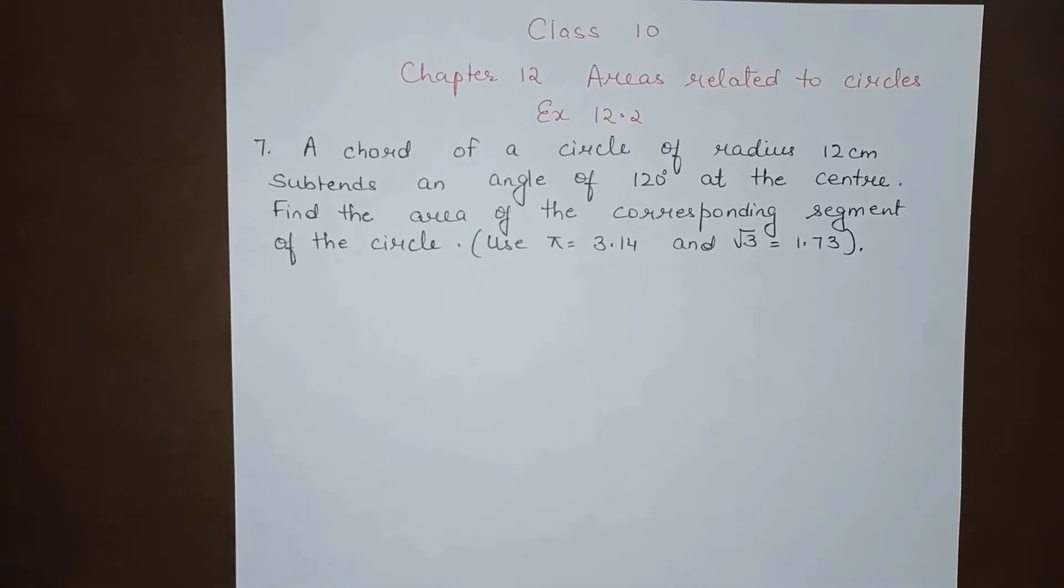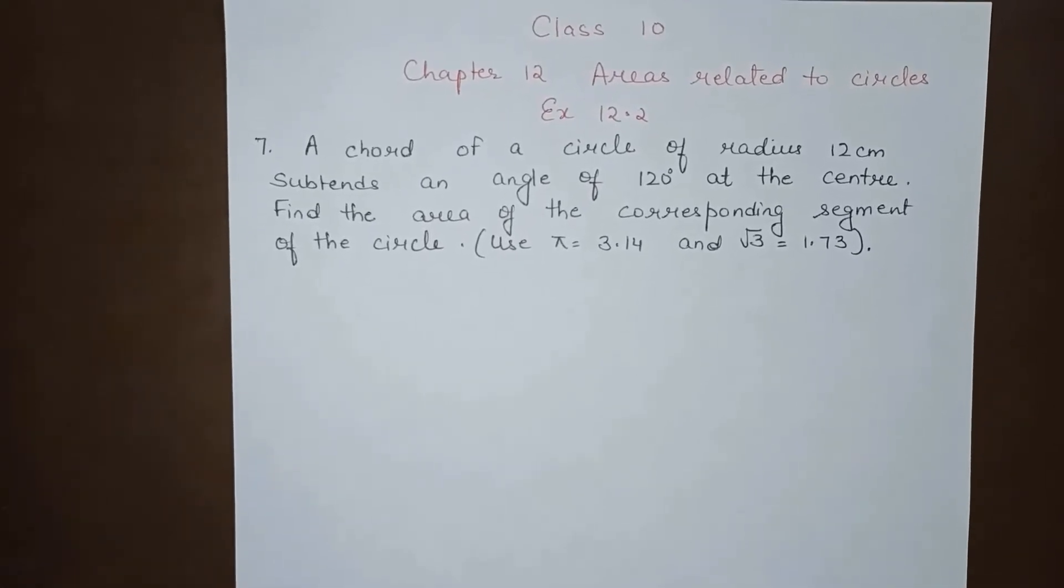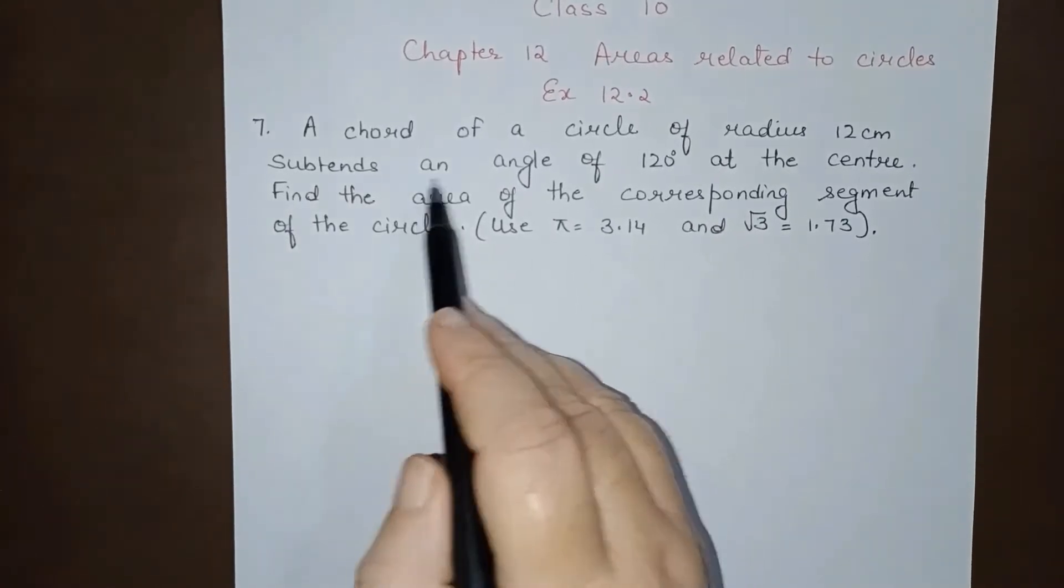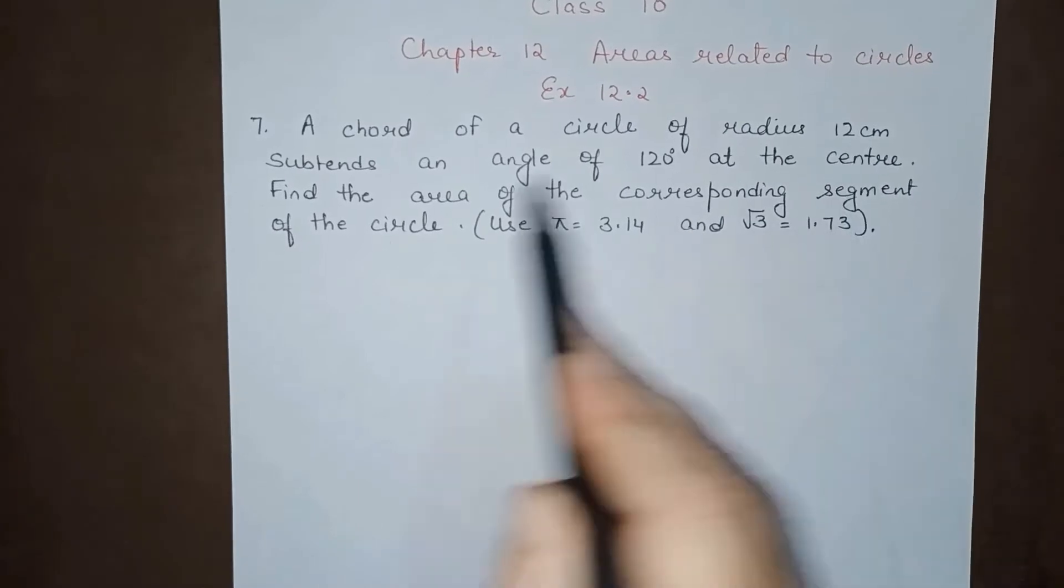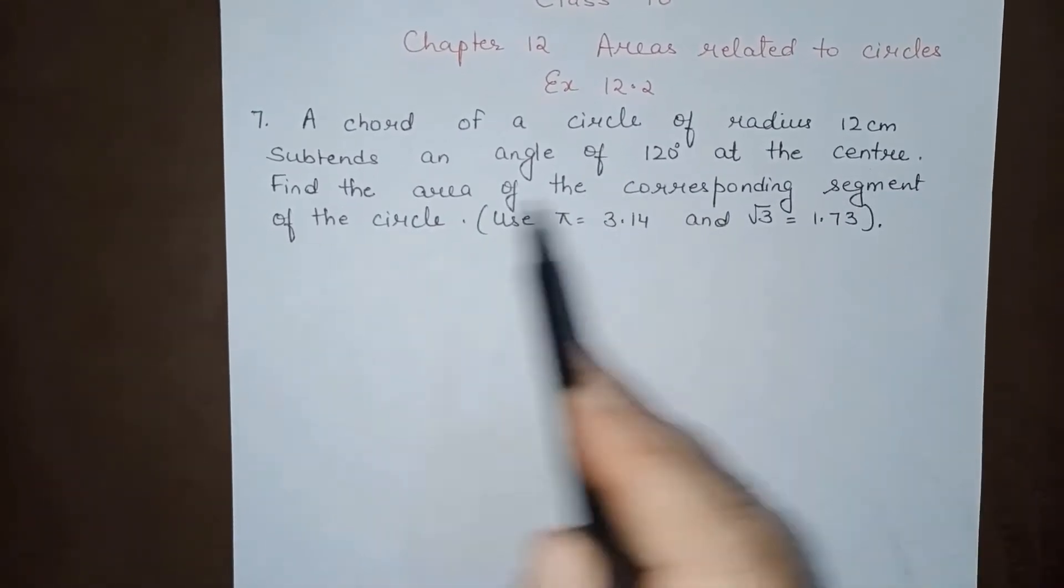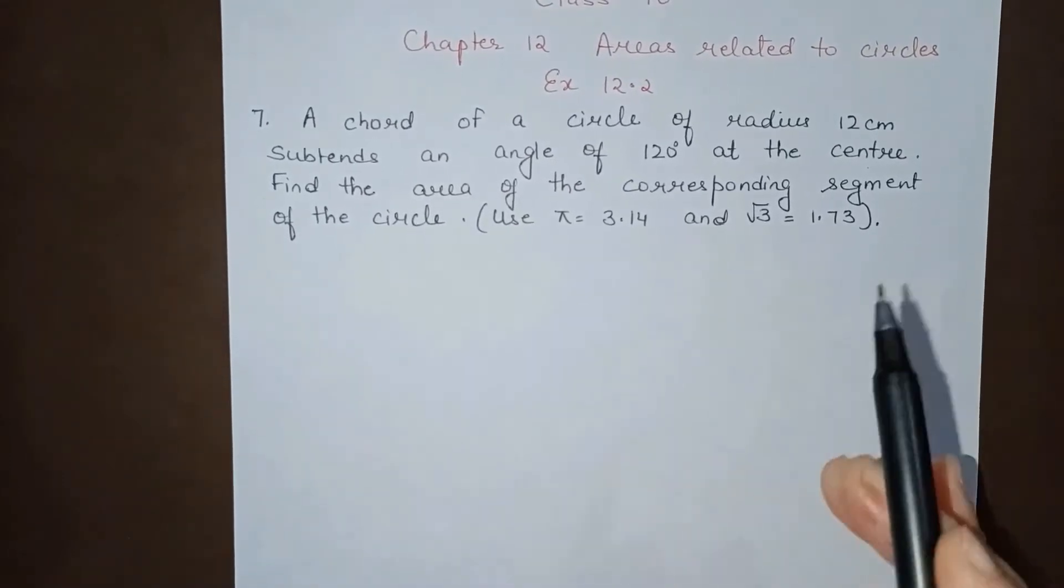Hello everyone, today we will do Class 10, Chapter 12, areas related to circles, exercise 12.2, question number 7. A chord of a circle of radius 12 cm subtends an angle of 120 degrees at the center. Find the area of the corresponding segment of the circle.